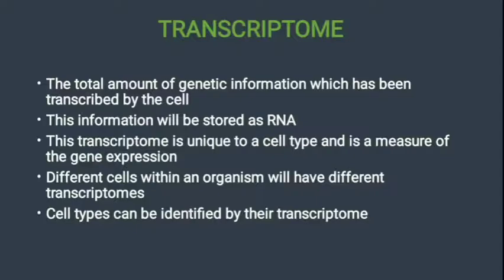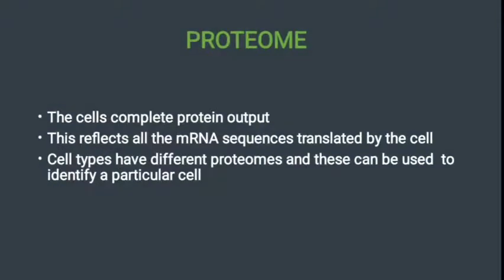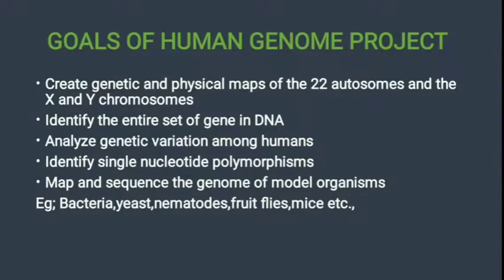Next we see the proteome. The proteome is the cell's complete protein output, reflecting all the mRNA sequences translated by the cell. Cell types have different proteomes, and these can be used to identify a particular cell type.